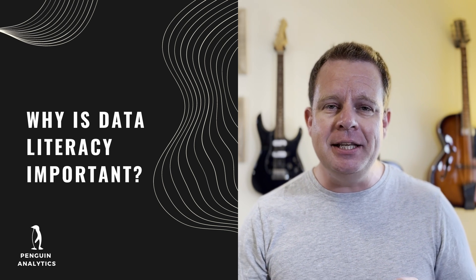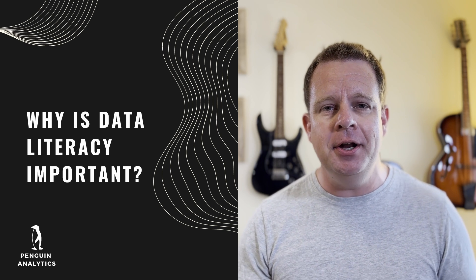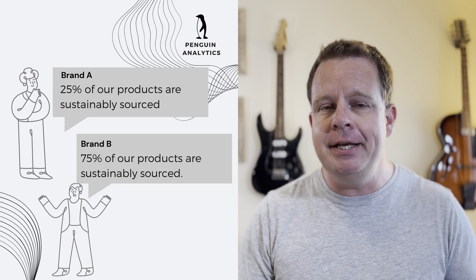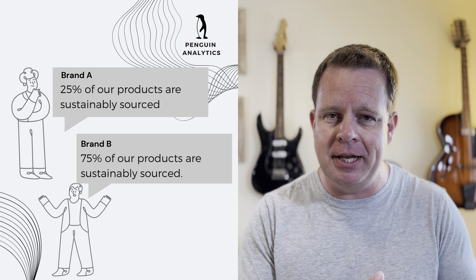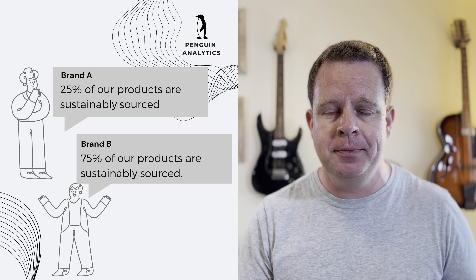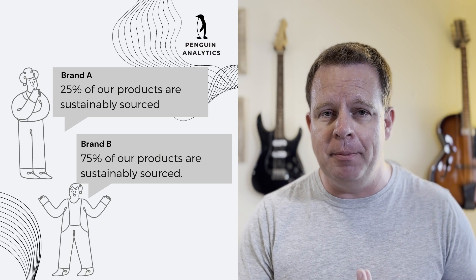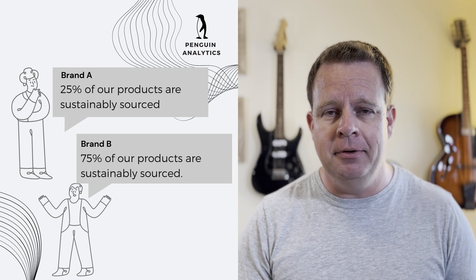And yet, that data can so easily be misleading unless you have the data literacy to understand what's really being said. I want to give you an example of two companies that are using statistics in advertising. Company A says that 25% of their products are sustainably sourced. Company B says 75% of their products are sustainably sourced.